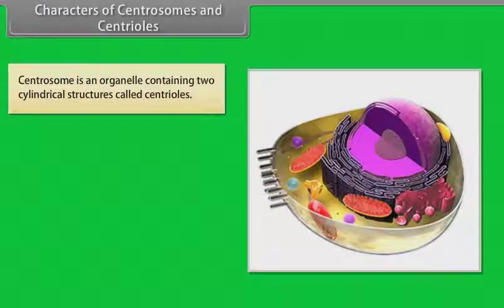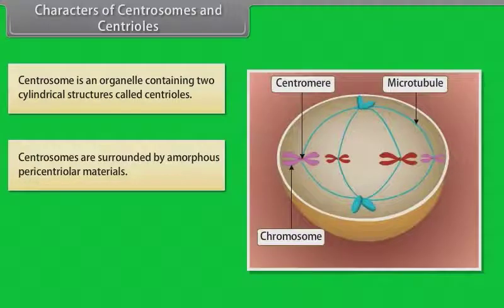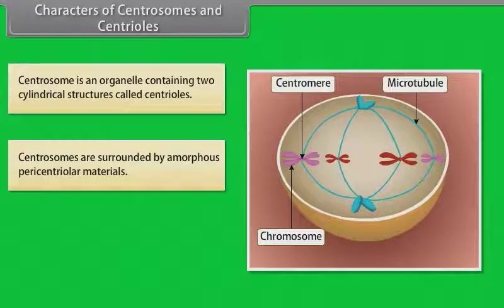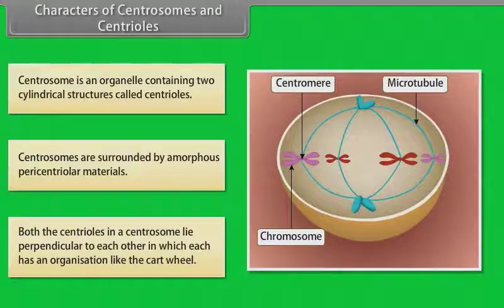Characters of centrosomes and centrioles. Centrosome is an organelle containing two cylindrical structures called centrioles. Centrosomes are surrounded by amorphous pericentriolar materials. Both the centrioles in a centrosome lie perpendicular to each other, and each has an organization like the cartwheel.